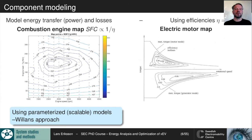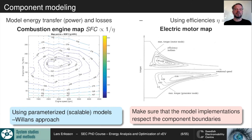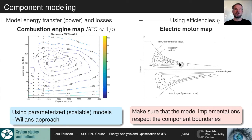When implementing these models, we must respect component boundaries. The engine should operate from idle speed up to its maximum speed, and we cannot take more torque than its maximum torque. The same applies to the electric machine: we cannot exceed maximum torque, maximum power, or overspeed the machine. If a trajectory goes outside these boundaries, it must be declared not allowed, for example by assigning infinite cost.